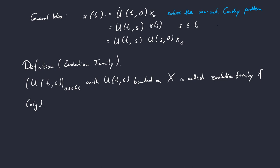Looking at the first part of our general idea, we see that if t equals 0, our evolution family should be the identity and we can generalize this to hold for all points in time s.